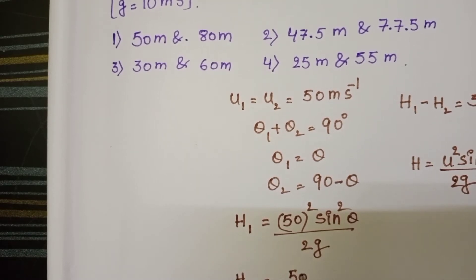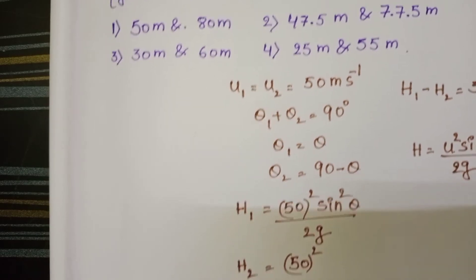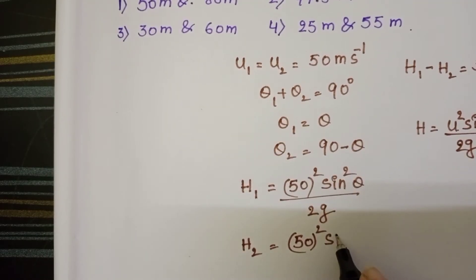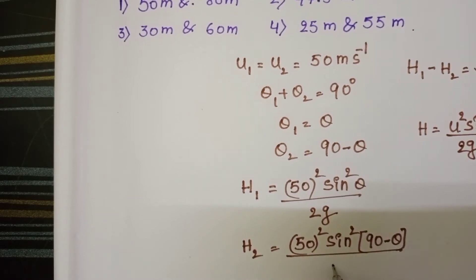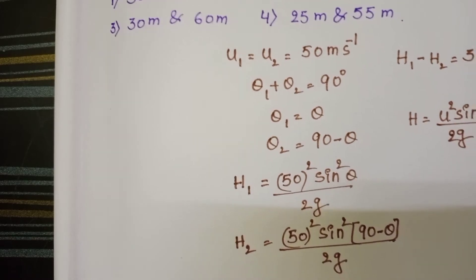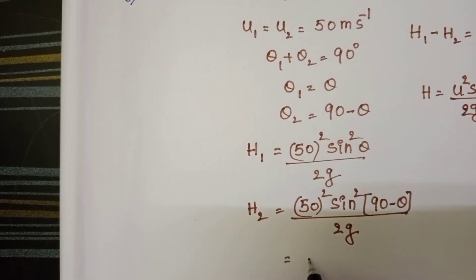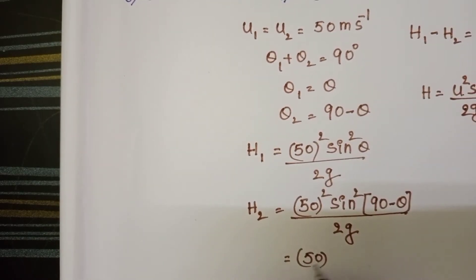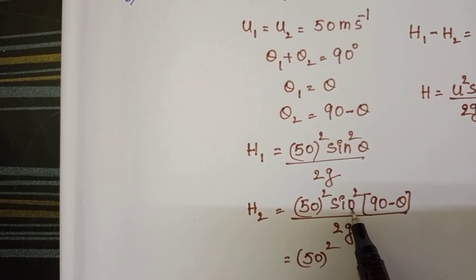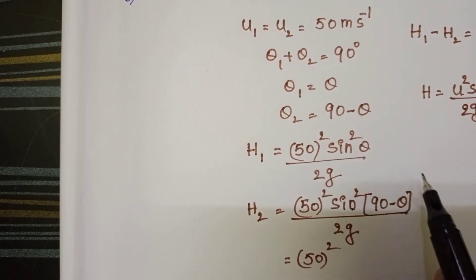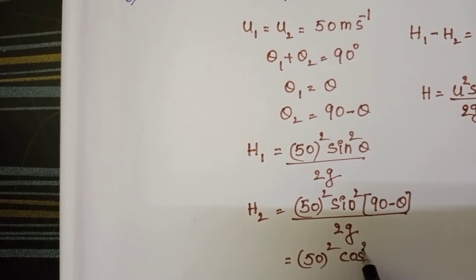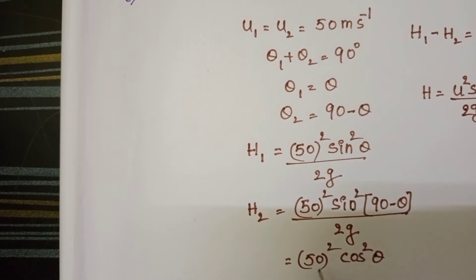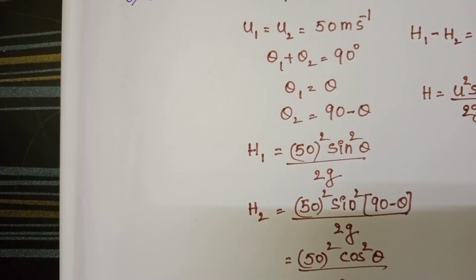H2 equals 50 squared sine squared, in place of angle 90 minus theta, by 2g. Since sine 90 minus theta equals cos theta, it becomes cos squared theta by 2g.